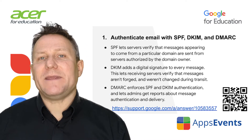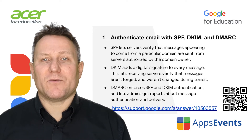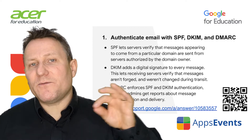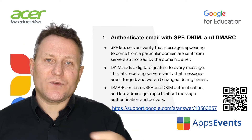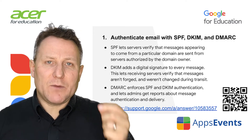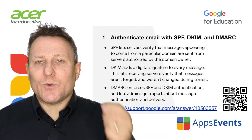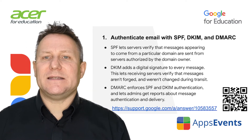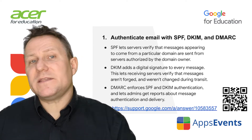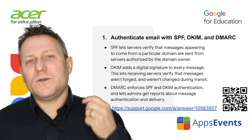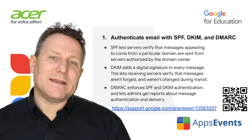Once SPF and DKIM are in place, you can set up a DMARC record to define how Google and other receivers should treat unauthenticated email purporting to come from your domain. You absolutely need to do this for your domain. I'll cover this in a future video, but you can use this support article to find out more now.